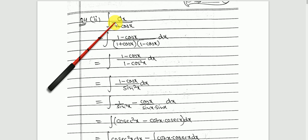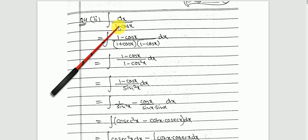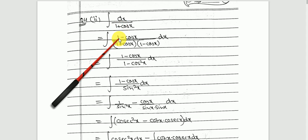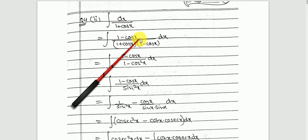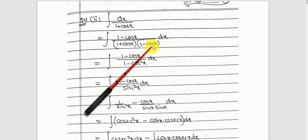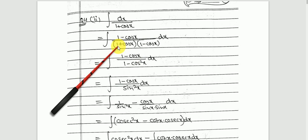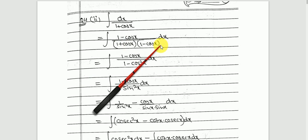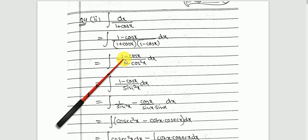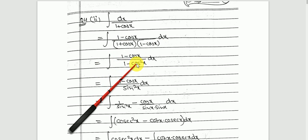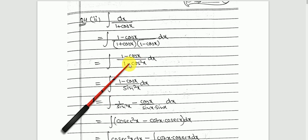We don't have any direct formula for this, so it's easy — we can just do the rationalization. Here I will multiply by 1 minus cos x and divide by 1 minus cos x. In the denominator I get an (a+b)(a-b) type, so I get 1 squared minus cos squared x, and I know that 1 minus cos squared x is sine squared x.